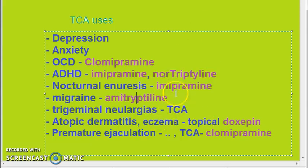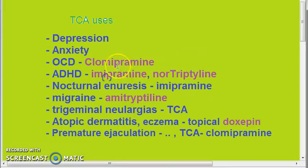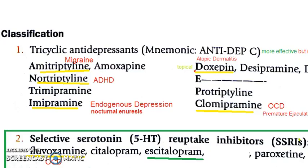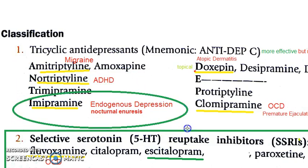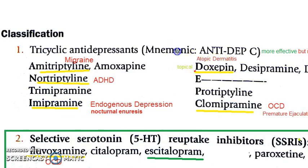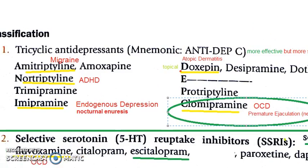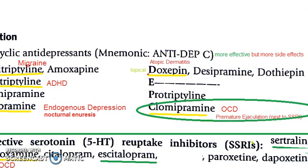The unique TCA drugs are: imipramine, clomipramine, nortriptyline, amitriptyline, and doxepin — five drugs total. Drug-wise summary: amitriptyline for migraine; nortriptyline for attention deficit hyperactivity disorder; imipramine for endogenous depression and nocturnal enuresis; doxepin for atopic dermatitis; clomipramine for OCD and premature ejaculation (after SSRIs).